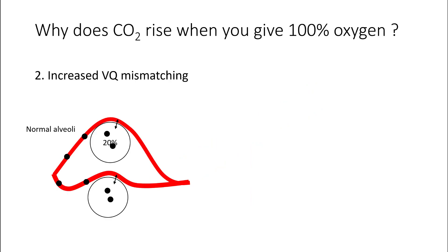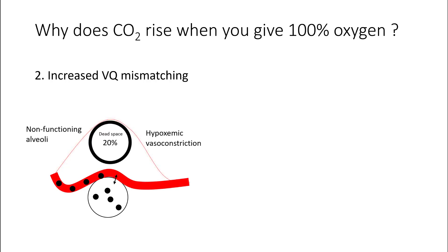The most important reason is increased VQ mismatching. Here we have two alveoli, both normal, and you are giving 20% oxygen. The black dots are carbon dioxide molecules. Most of the carbon dioxide molecules are transferred to the alveoli without any problems. In areas with dysfunctional alveoli, your body will perform hypoxic vasoconstriction to decrease blood flow to these areas. Blood flow is then redirected towards normal alveoli where CO2 can diffuse out easily.